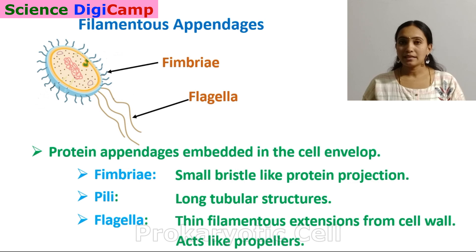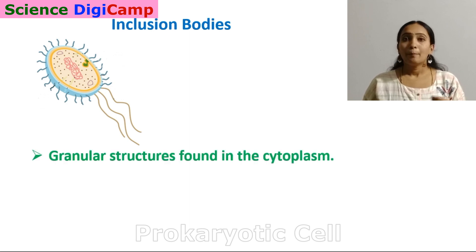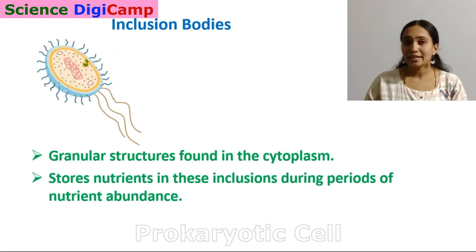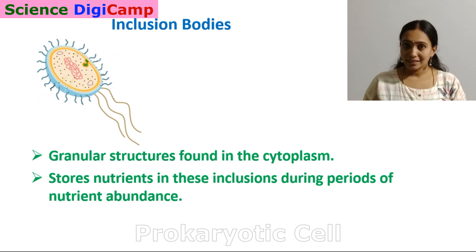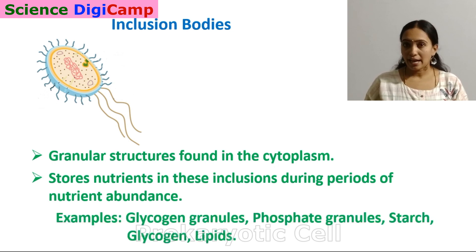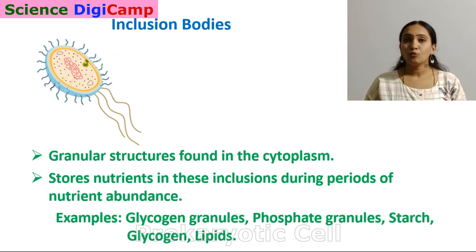Moving on to inclusion bodies, also known as inclusions. Bacteria have granular structures in the cytoplasm called inclusion bodies. Bacteria store nutrients in these inclusion bodies and use them during periods of nutrient depletion. Food is stored in the form of starch, lipids, glycogen granules, and phosphate granules. Inclusion bodies serve as storehouses for the bacteria, especially when nutrients become depleted.